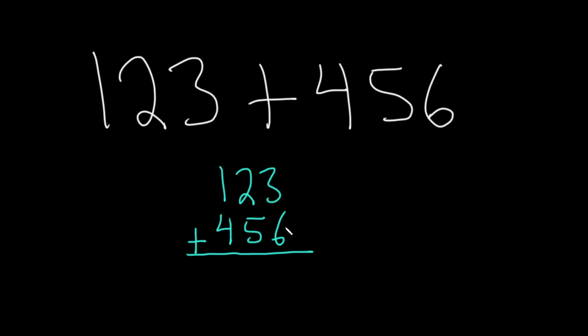Then you just add 3 plus 6 is 9. Now, if this was a number 10 or larger, you would carry. But in this case, there's nothing to carry. So 3 plus 6 is 9, 2 plus 5 is 7, and then 1 plus 4 is 5. So the answer in this case is 579.